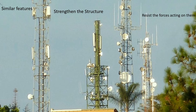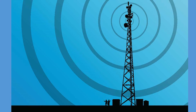A cell phone tower consists of different beams and struts that withstand tension and compression forces. Let's look at a tower. It has a wide base that helps stabilize it, and the tower's members are held together using cross pieces.